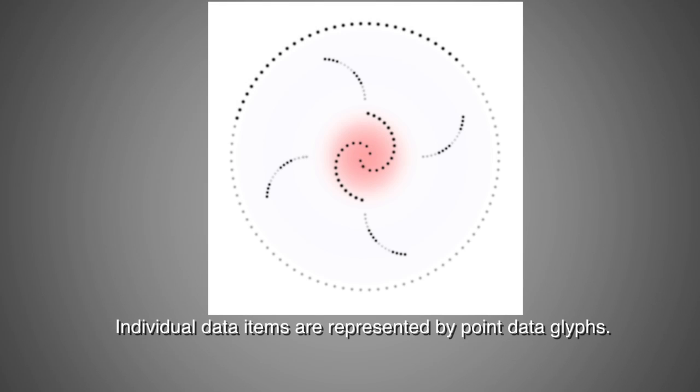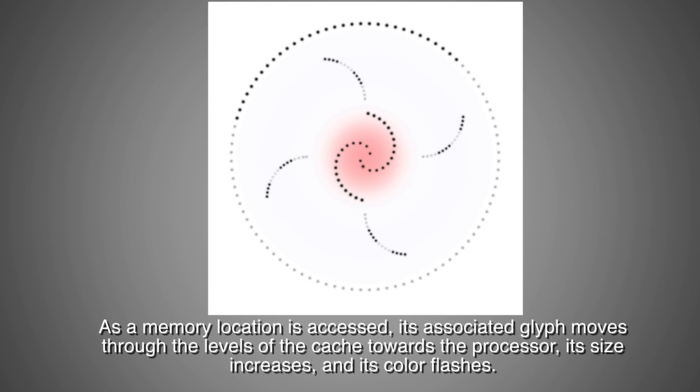Individual data items are represented by point data glyphs. As a memory location is accessed, its associated glyph moves through the levels of the cache towards the processor. Its size increases and its color flashes.